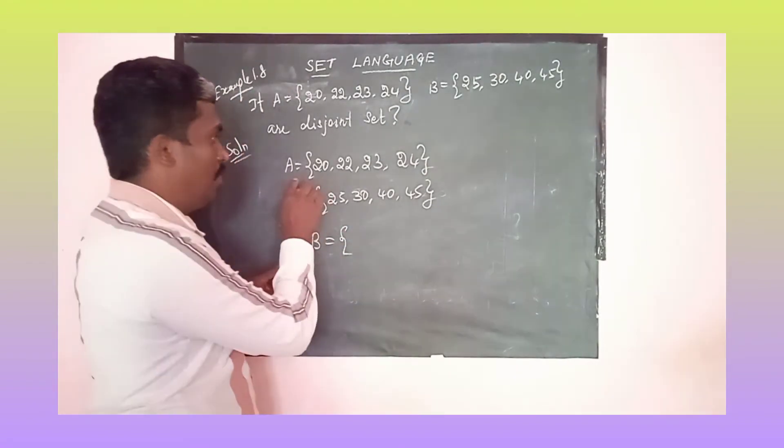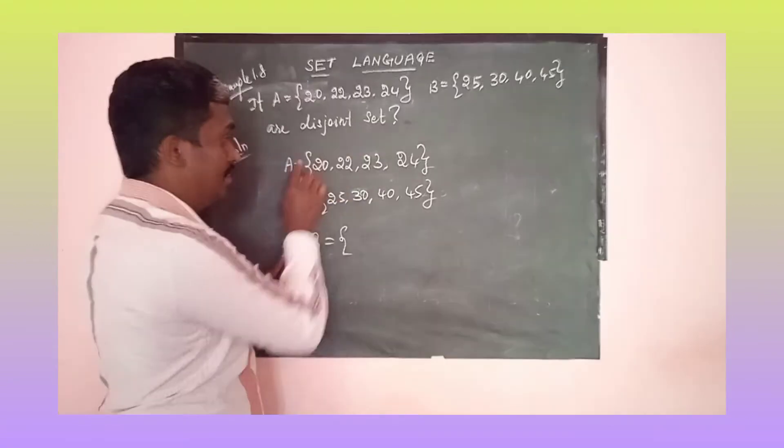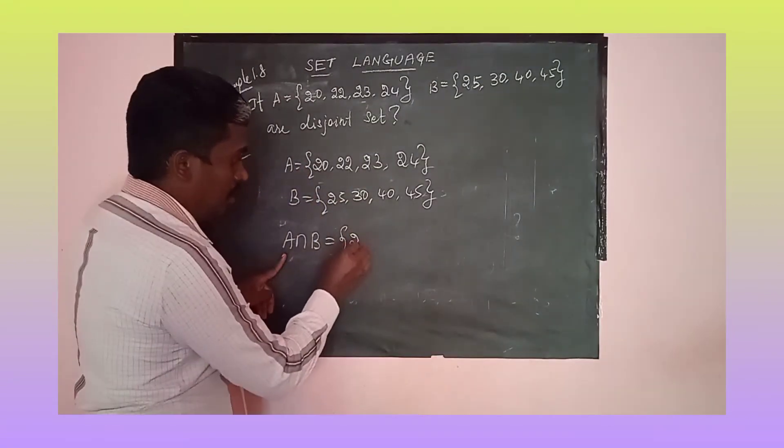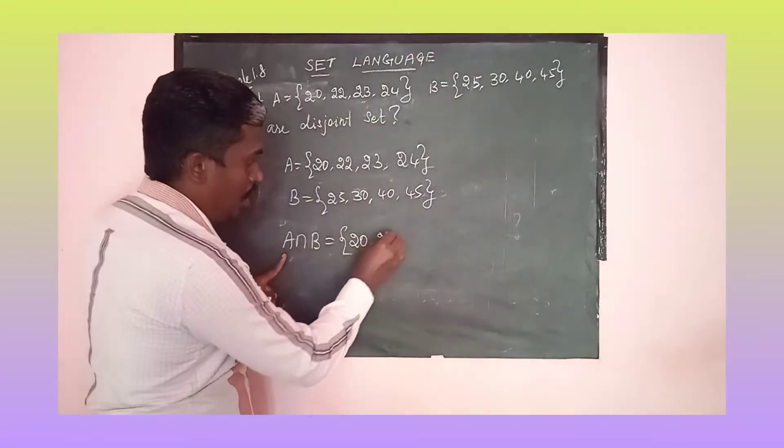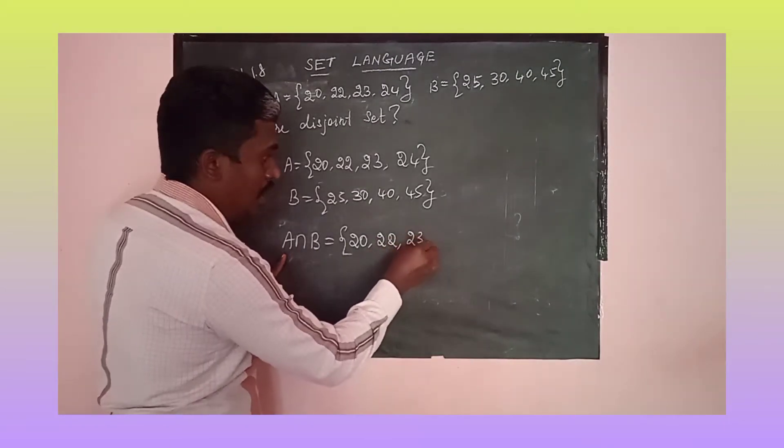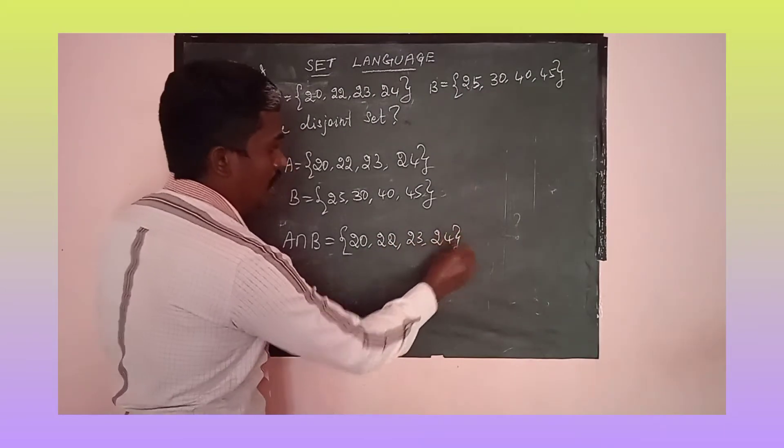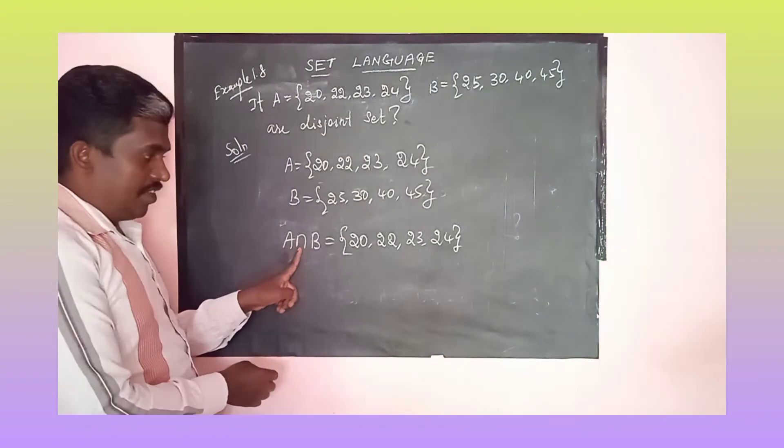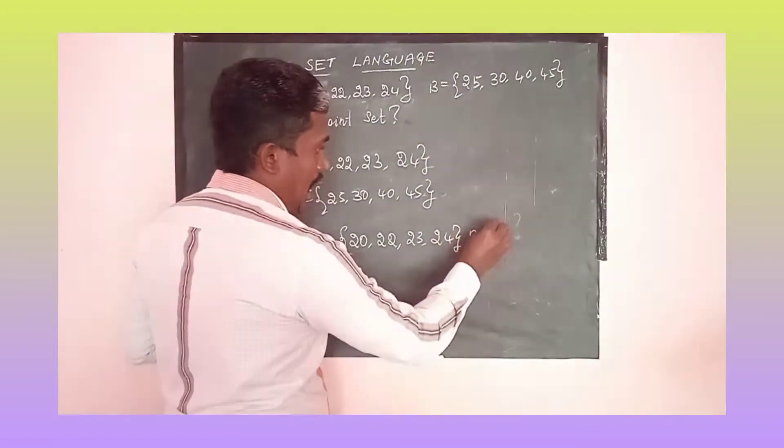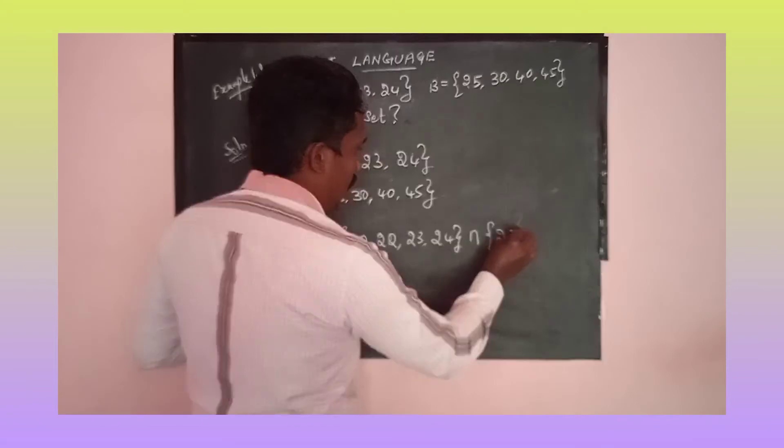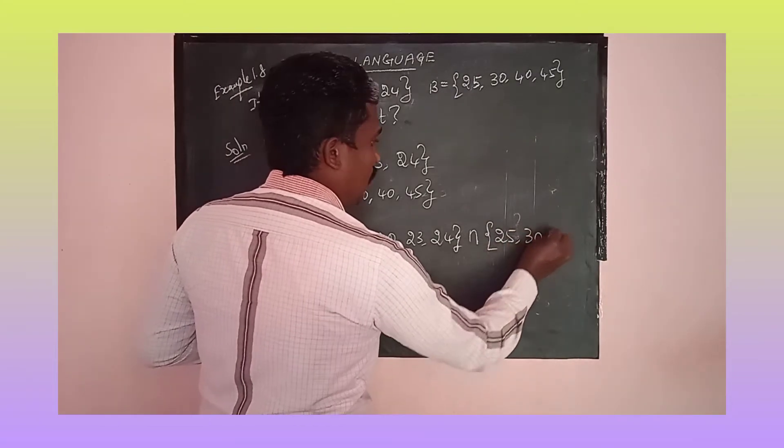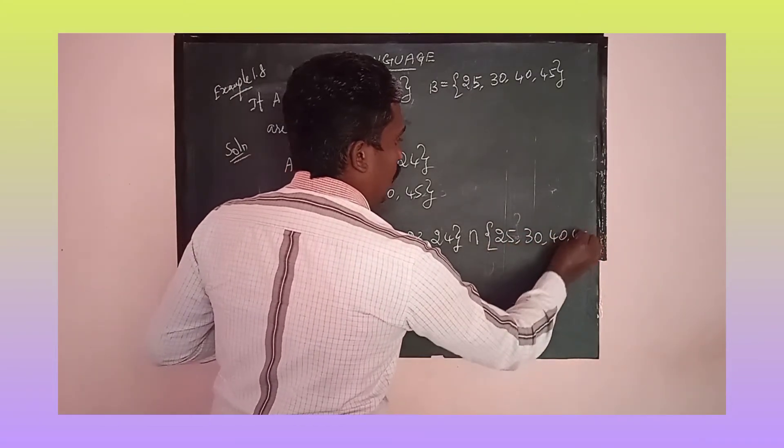First, A is equal to the set 20, 22, 23, and 24. And next, intersection B is equal to 25, 30, 40, and 45.